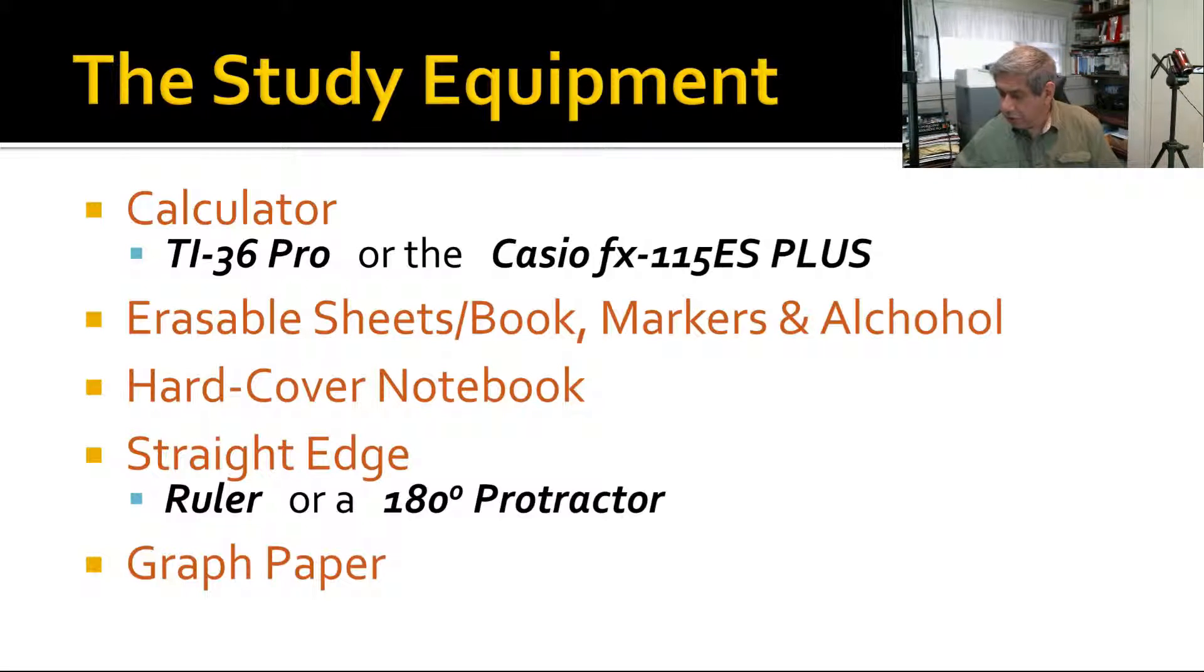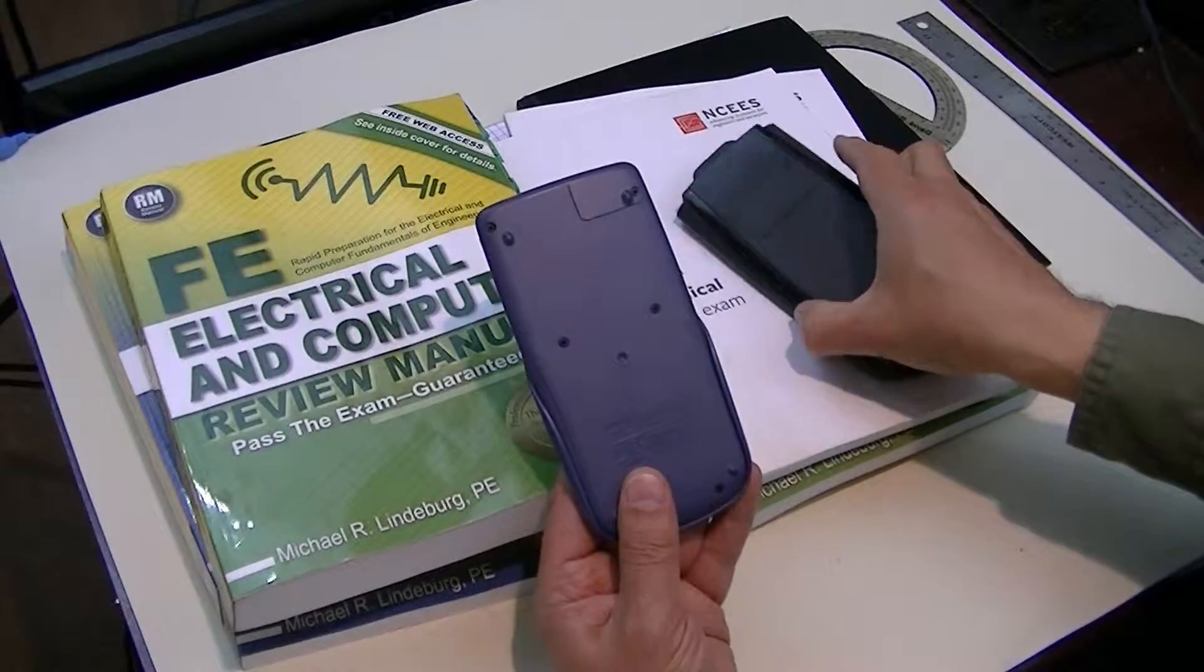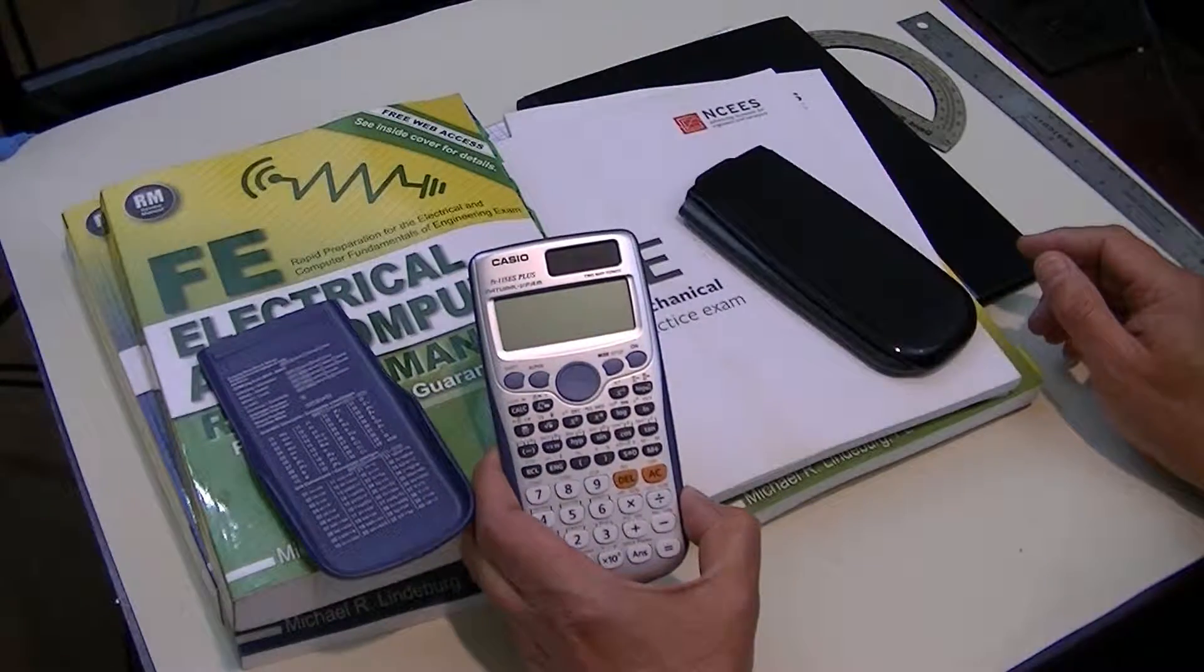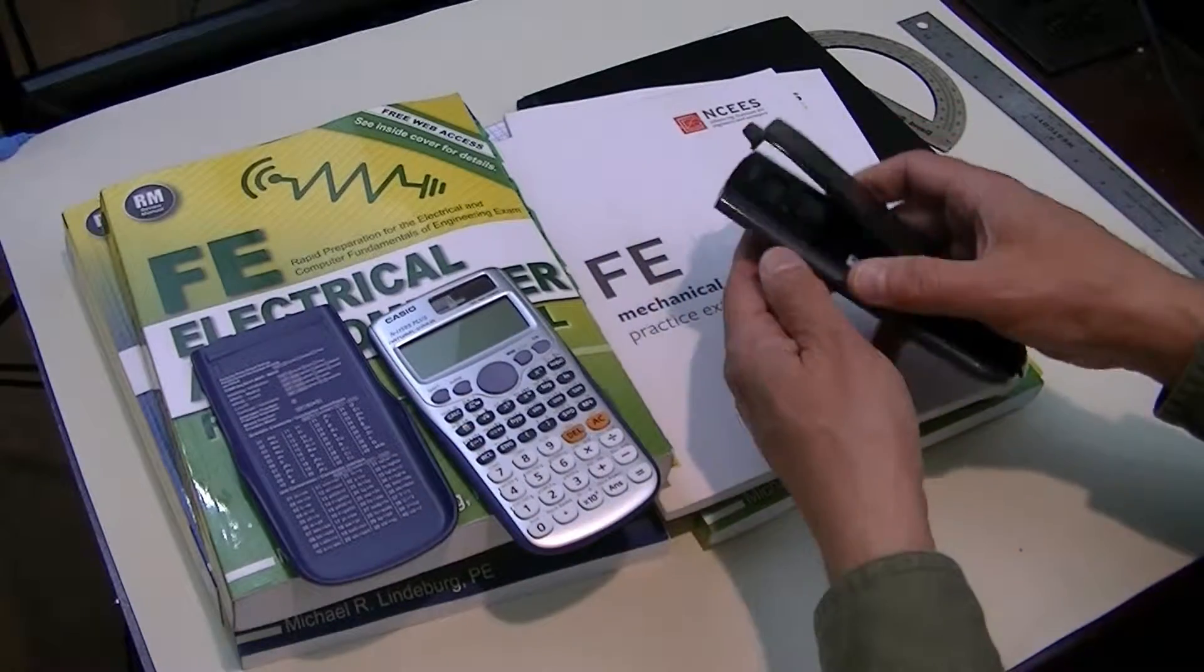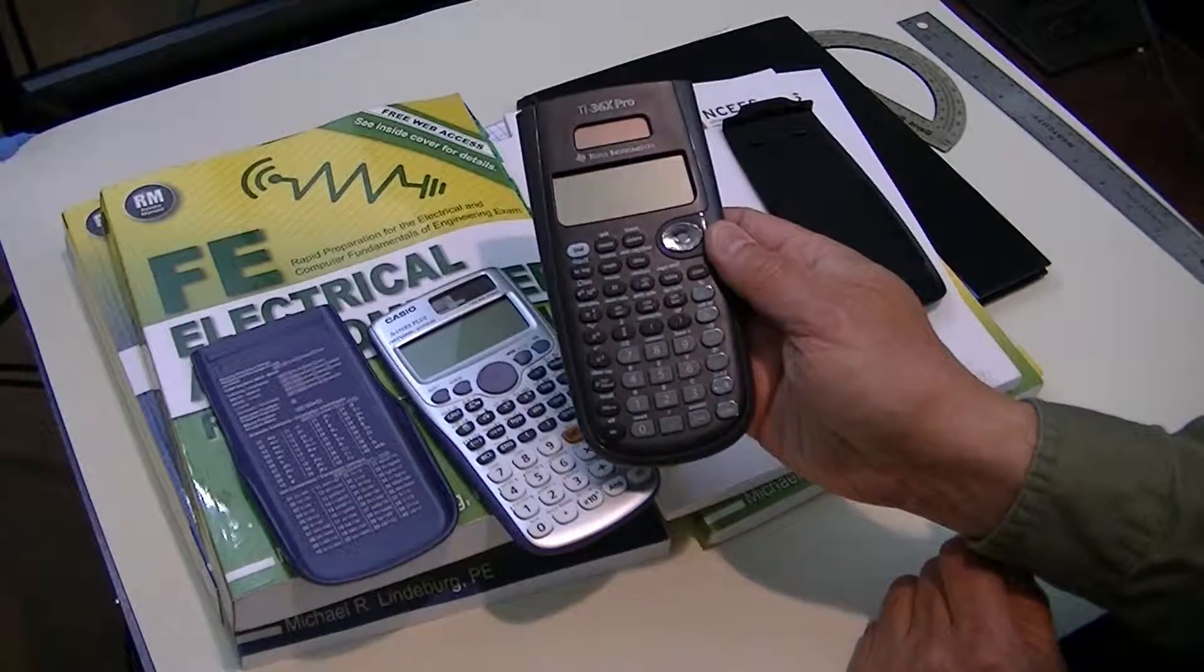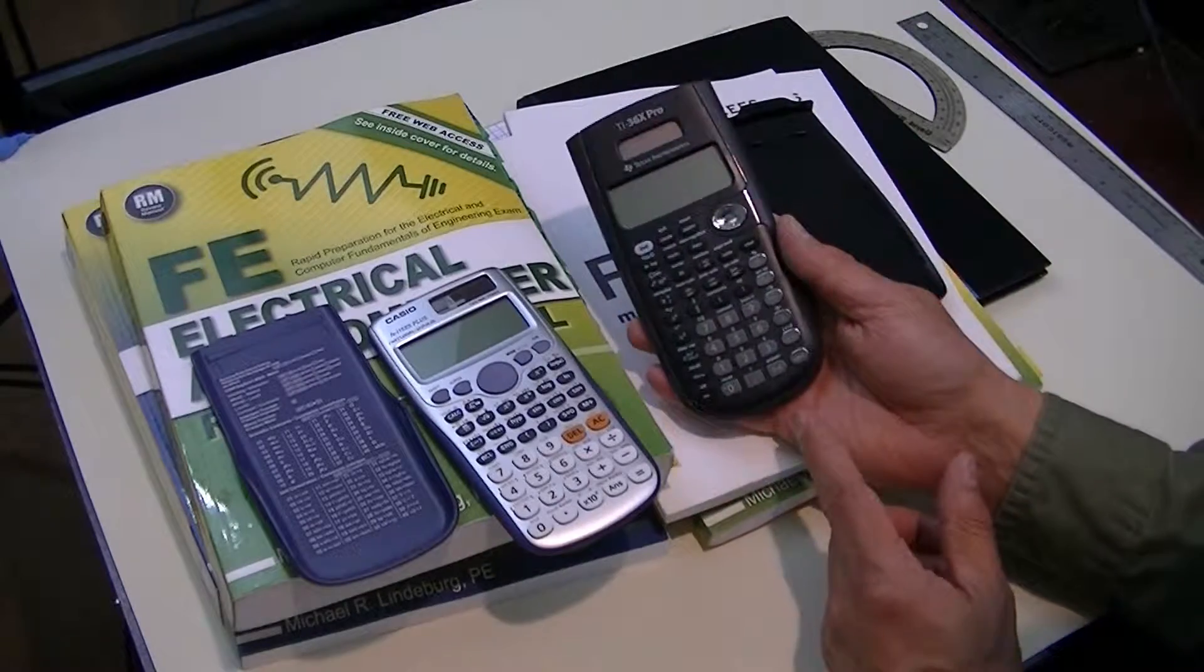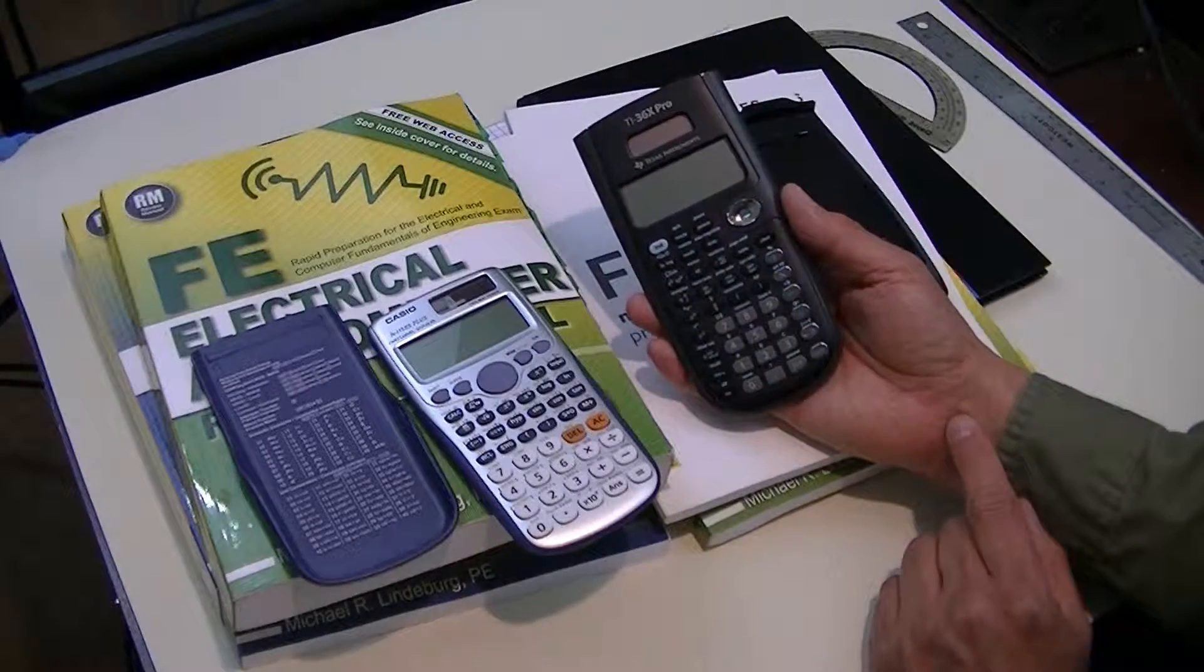Other things you need to have: I already showed you calculators in a previous video, but I'll show them to you again. The two calculators that are approved—the top end of the Casio and the top end of the TI are the only ones I really considered. This is the Casio FX-115ES Plus, and this one here is the TI-36X Pro. I'll be covering a separate lesson on the calculators, but I will most likely focus entirely on the TI calculator.